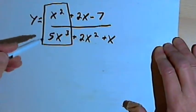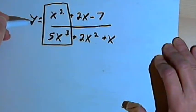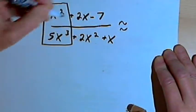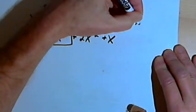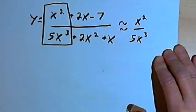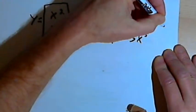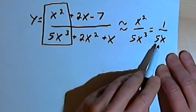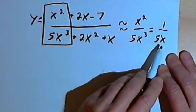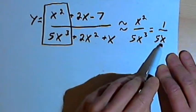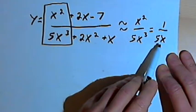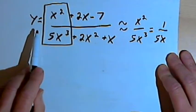The degree in the numerator is less than the degree in the denominator, so we have a horizontal asymptote of y equals zero. To explain why: we can think of this function as equaling approximately x squared over 5x to the third. When we reduce that down, we get 1 over 5x. As x gets very, very positive or very, very negative — a large value — we're going to have 1 over a very large number, and that's going to be very close to zero. So the horizontal asymptote will be y equals zero.